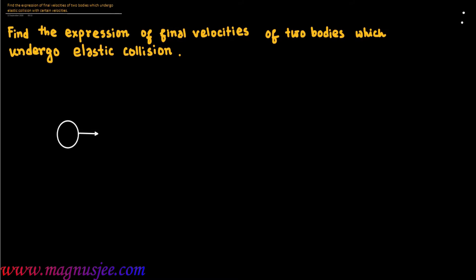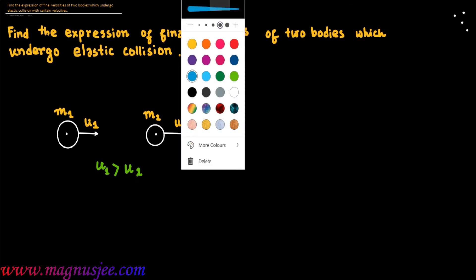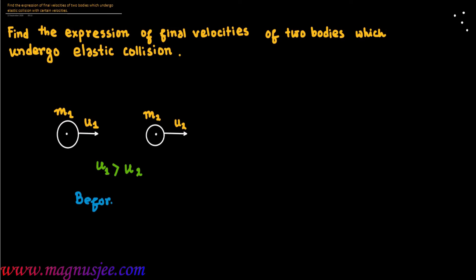In the diagram, this is a body A of mass M1 which is moving with velocity U1 before the elastic collision, and this is another body B of mass M2 which is moving with smaller velocity U2. U1 and U2 are the initial velocities of the two bodies A and B. Before this elastic collision, U1 is greater than U2, meaning the first body is moving with greater velocity, so body A will collide with body B.